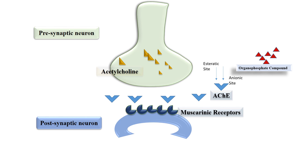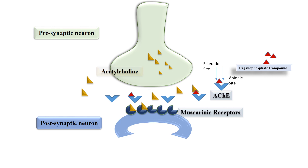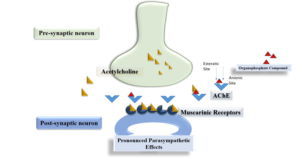In organophosphate poisoning, the organophosphate compound binds with the esterotic site of the enzyme. Now acetylcholine cannot bind with the enzyme. So there will be excess acetylcholine in the synaptic cleft. More acetylcholine will bind with its muscarinic receptors on the postsynaptic neuron. This results in pronounced parasympathetic effects, which is the main cause of signs and symptoms of organophosphate poisoning.